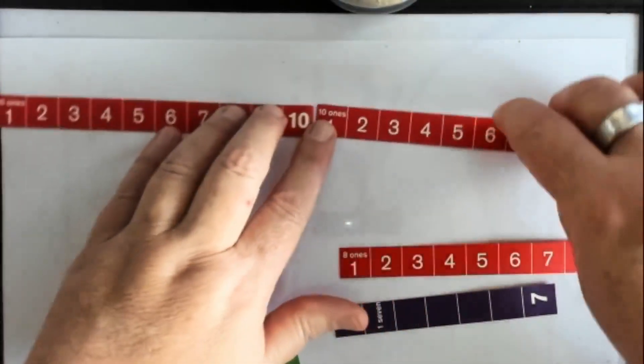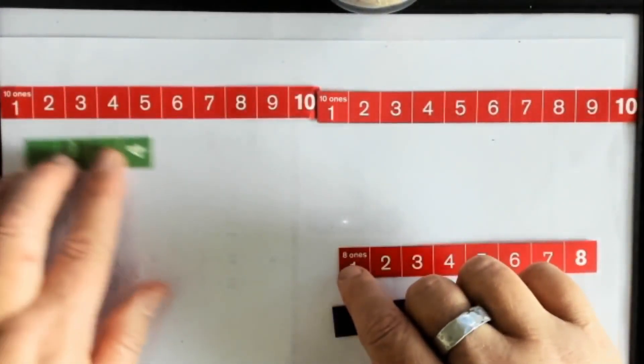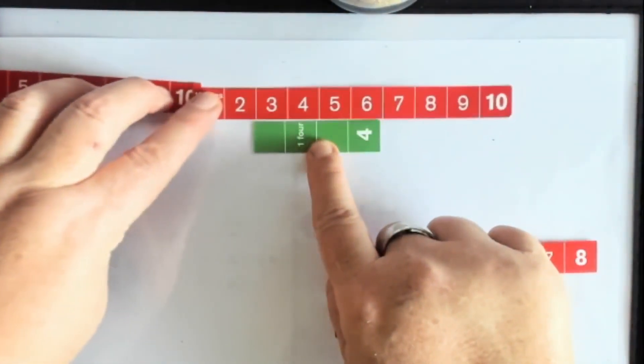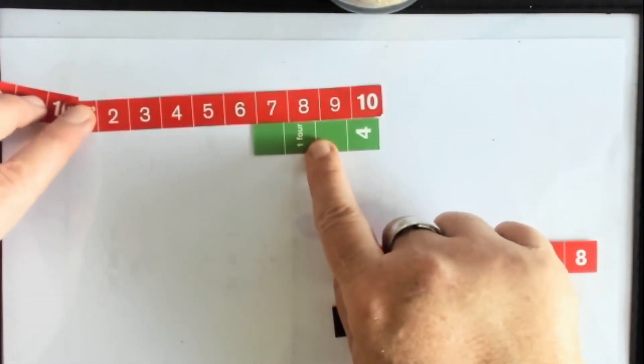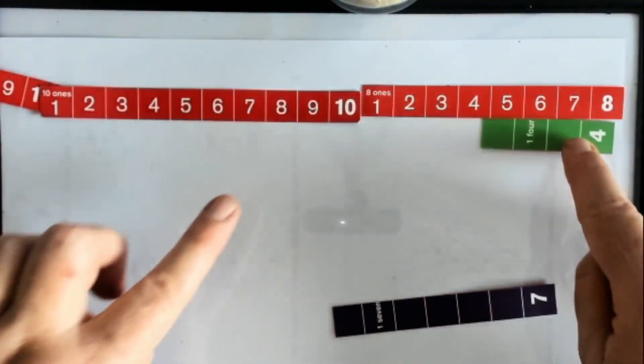Let's have a look at units of 4. So now I've got 1, 2, 3, 4, 5, 6, 7.